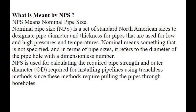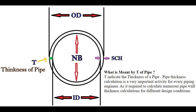NPS is used for calculating the required pipe strength and outer diameter required for installing pipelines using trenchless methods, since these methods require pulling the pipes through a borehole. As seen in the diagram, T indicates the thickness of a pipe. Pipe thickness calculation is a very important activity for every piping engineer, as it is required to calculate numerous pipe wall thickness values for different design conditions.